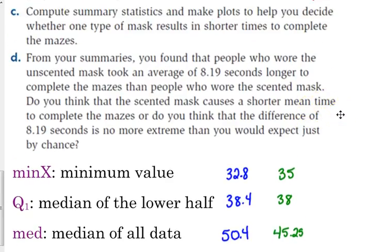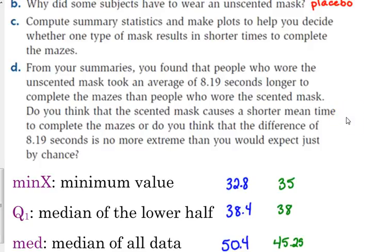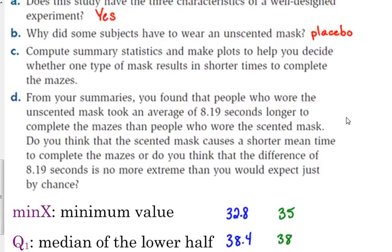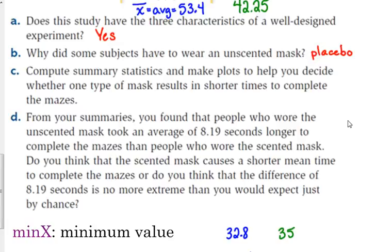If we look at part D, it says that from your summaries you found that the people who wore the unscented mask took an average of 8.19 seconds longer. If we were to subtract those two averages, it would take 8.19 seconds longer for the unscented mask versus the scented mask people. Do you think that it really makes a difference? Do you really think that that 8 second difference in the averages is because they were wearing a scented mask?